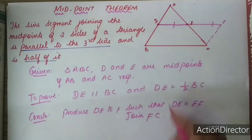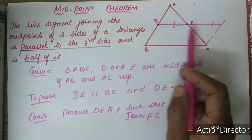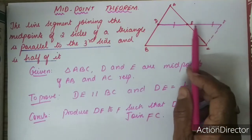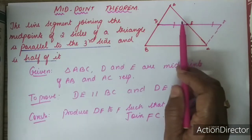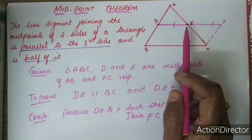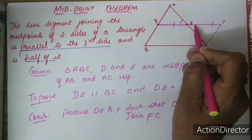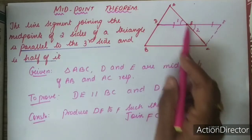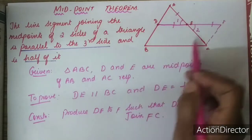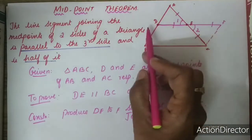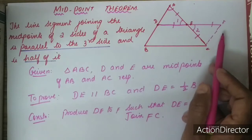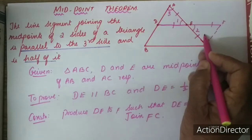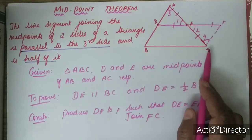Now we are going to take these two triangles and prove that they are congruent. In these two triangles, vertically opposite angles are equal — let us name these angles as angle 1 and angle 2. Second, since E is the midpoint of AC, AE is equal to EC. Third, angle DAE is equal to angle FCE — let us name them angle 3 and angle 4.